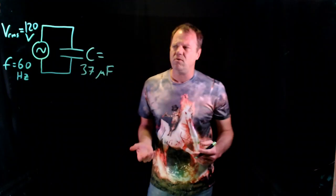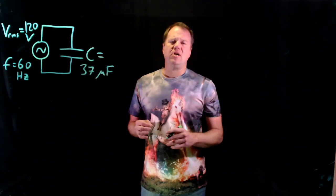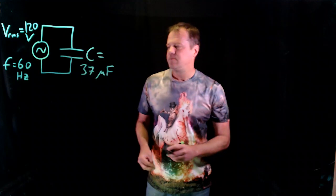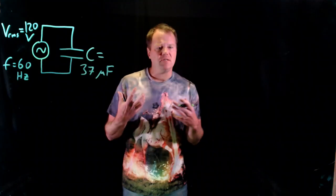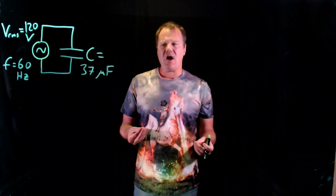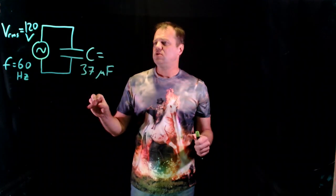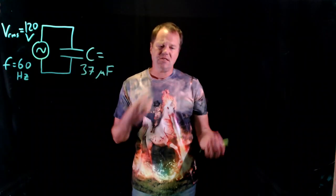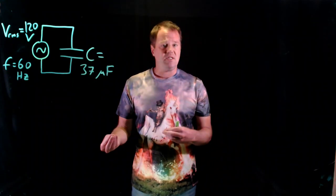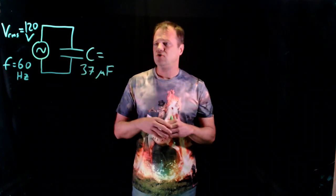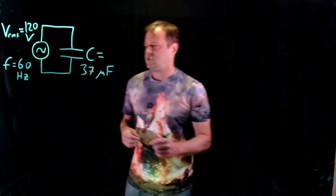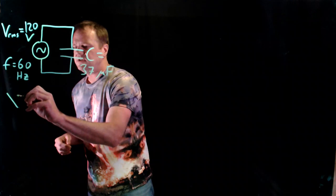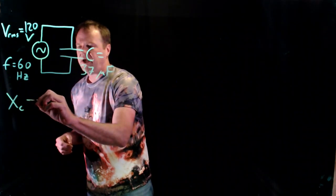Okay, so the first thing I would do with this circuit is calculate something called capacitive reactance. And capacitive reactance is a very handy thing to calculate in these types of circuits because it kind of takes the place of resistance. And so we can treat the capacitor kind of like a resistor. So capacitive reactance uses symbol X.